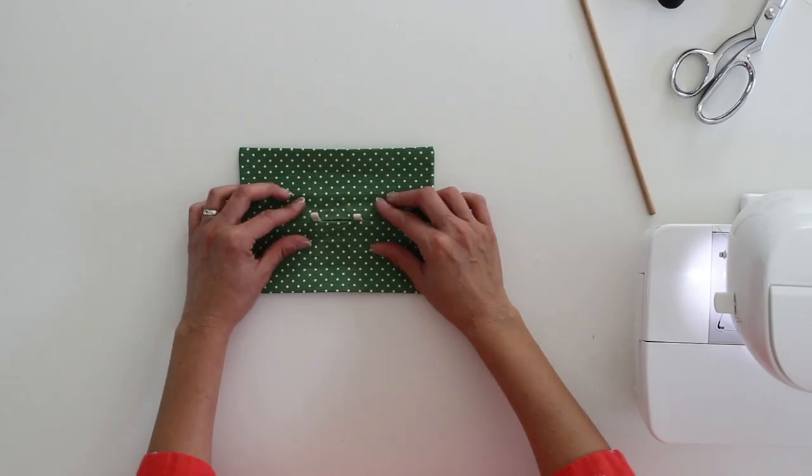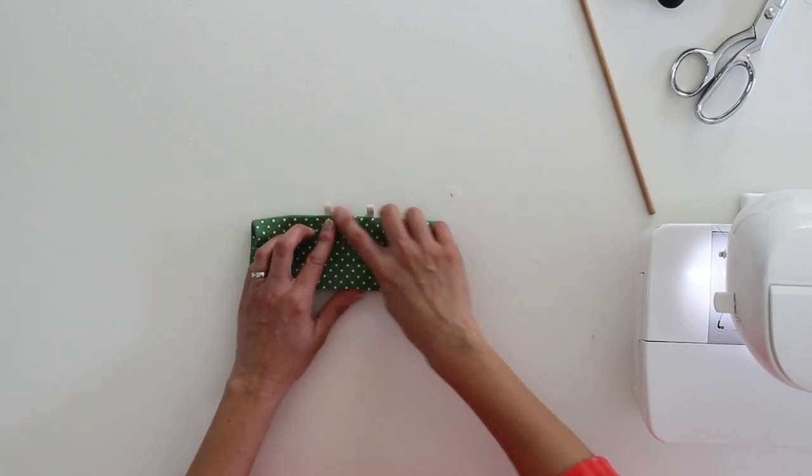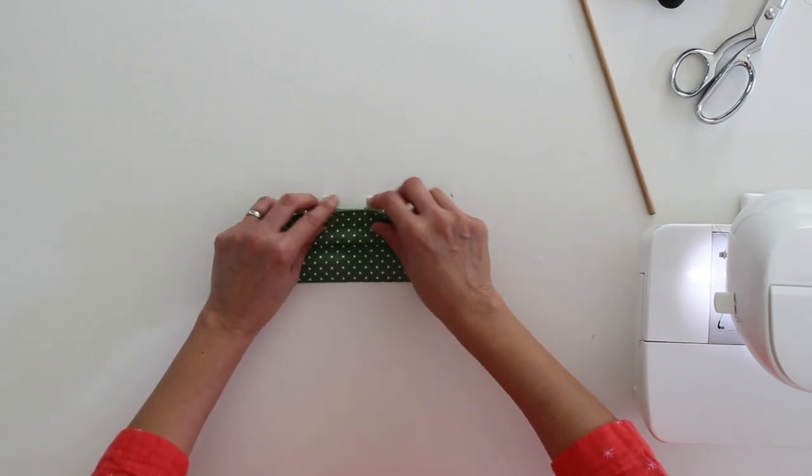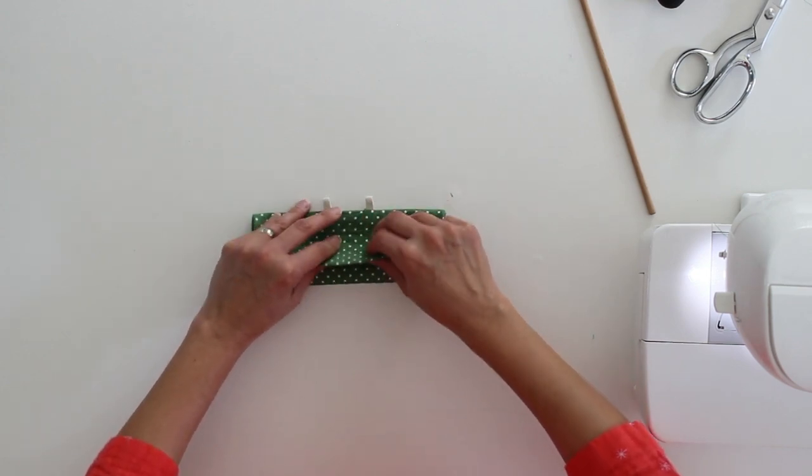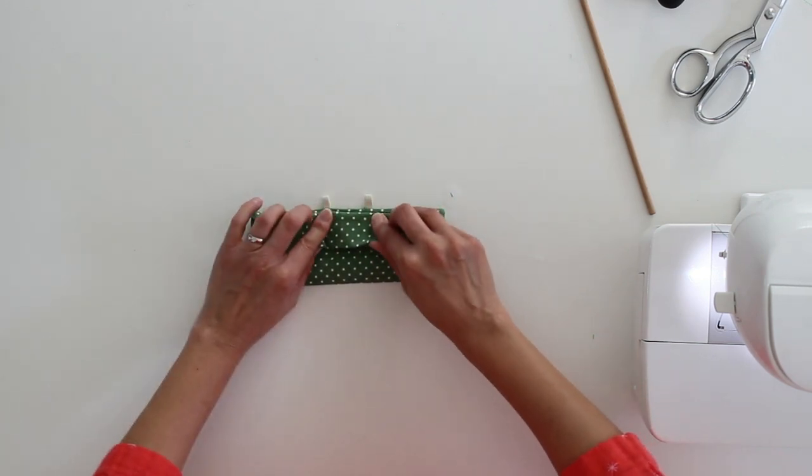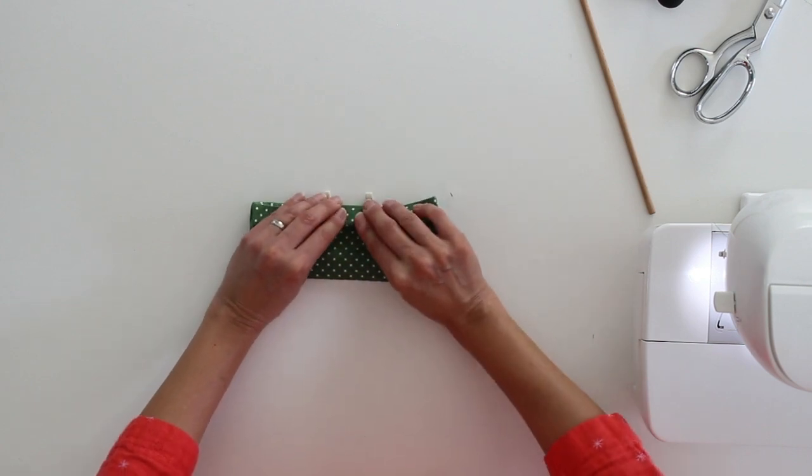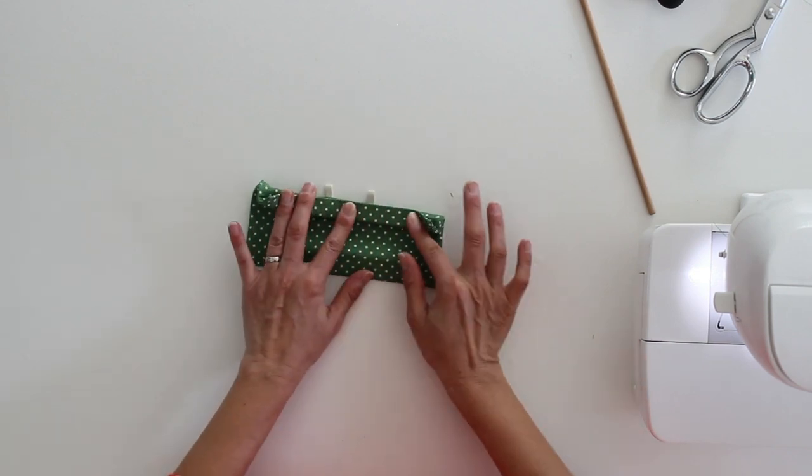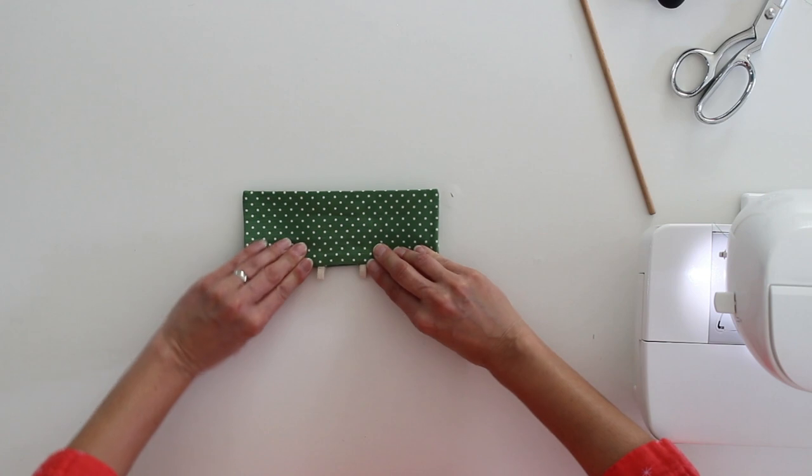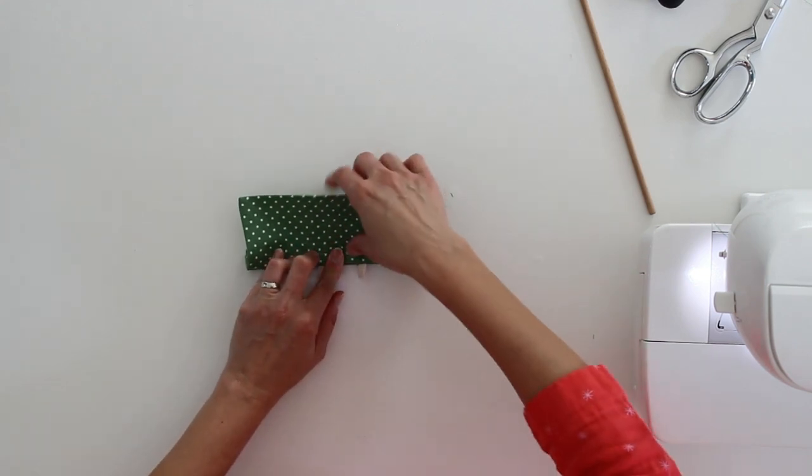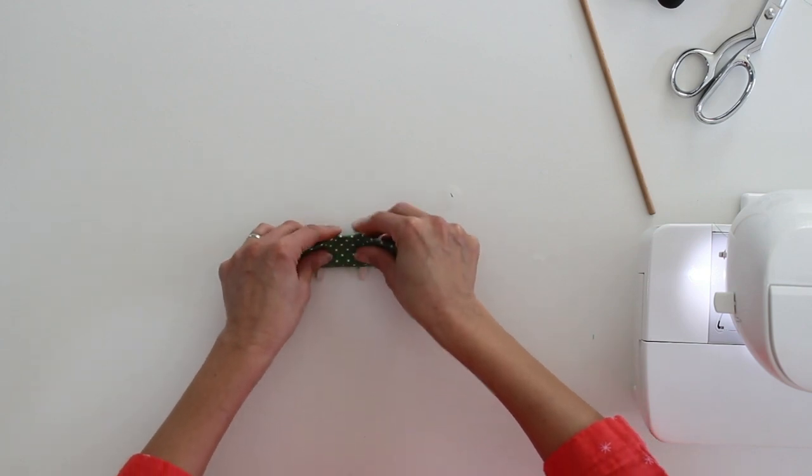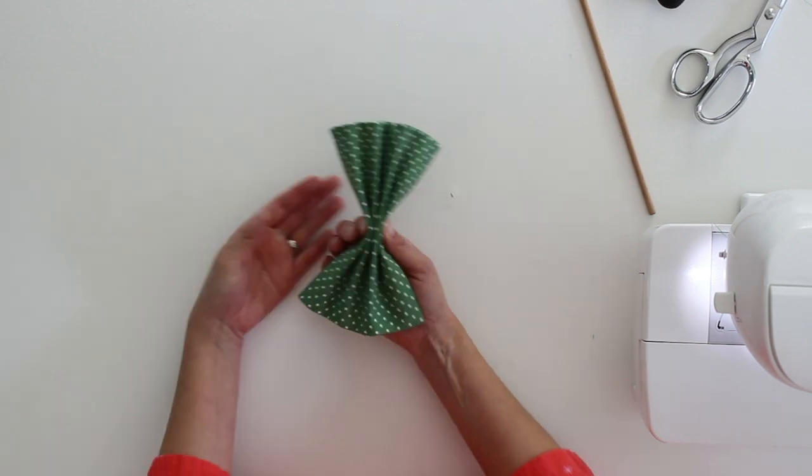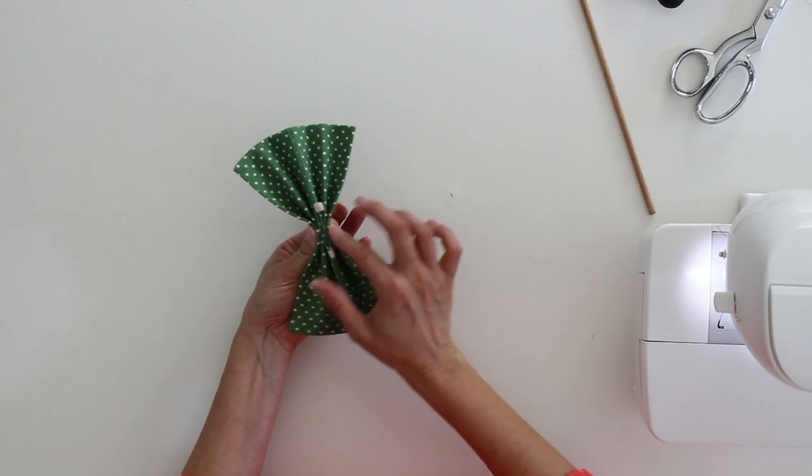My next step is going to be to accordion fold my bow tie. Now I want these elastic loops to end up on the outside. So I'm going to fold like this so that my folds are even. And those elastics are still sticking out. I'm going to do that on both ends. And once you have one side folded and you know how big the folds are, it's easier to fold the second side.